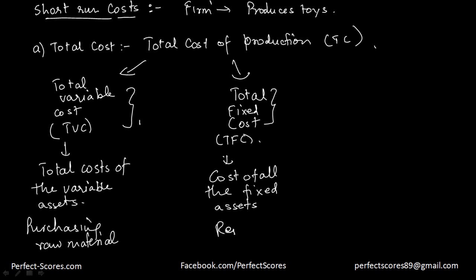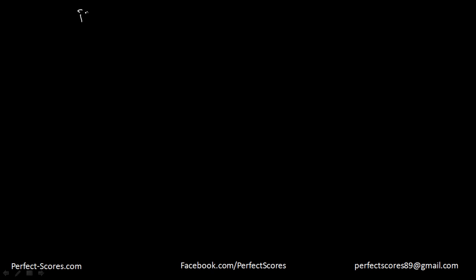Let's suppose the rent and the capital — all these costs are fixed because they do not change over the period of time. So from here I can say that total cost is equal to total fixed cost plus the total variable cost.